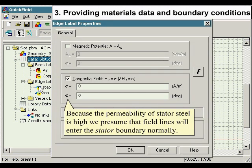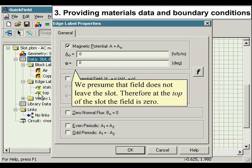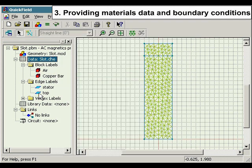Because the permeability of stator steel is high, we presume the field lines will enter the stator boundary normally. We assume that the field does not leave the slot. Therefore, at the top of the slot, the field is 0.